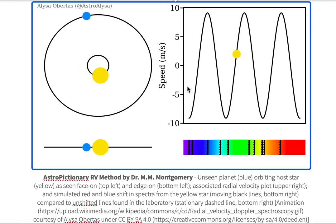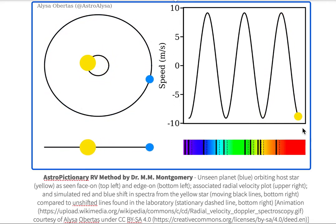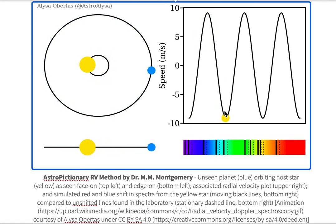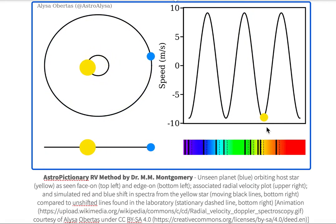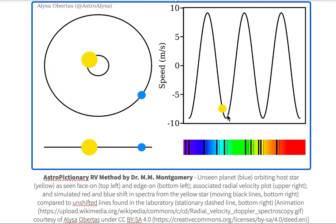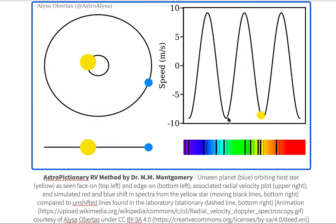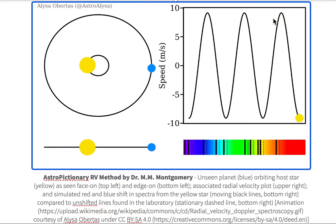We can take a look at this in terms of the radial velocity, or the speed over time — specifically the speed of the star towards or away from us over time. We see this star moving towards us and away from us. Negative numbers mean that the star is coming towards us — we call that a blue shift. Positive numbers mean the star is going away from us — we call that a red shift.